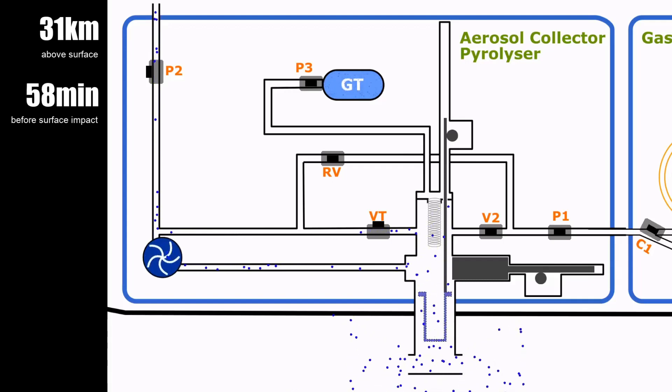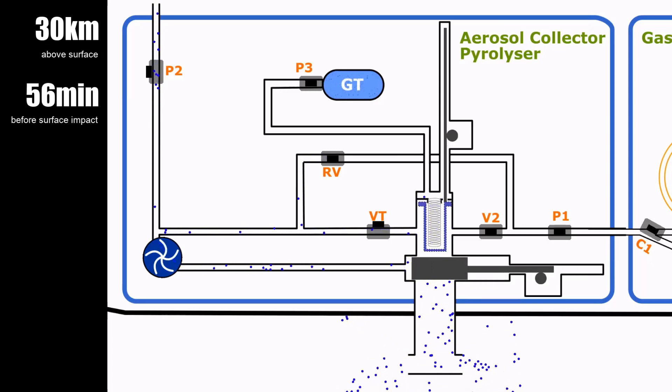60 minutes before surface impact, at this point, the sampling phase is over. The pump is turned off. The collection filter is retracted back into the oven. Finally, the gate valve and VT are closed. The oven is turned on and heated to 250, then 600 degrees Celsius, allowing pyrolysis to occur in the aerosol sample collected by the collection filter.